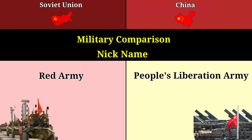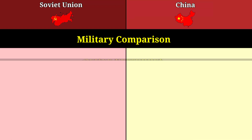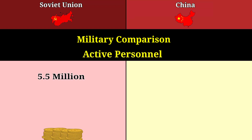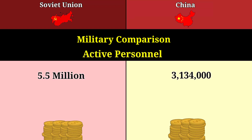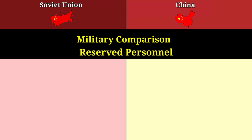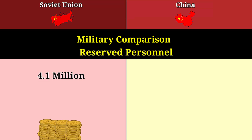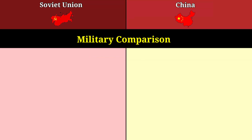Military comparison. Nickname: Red Army for the Soviet Union, People's Liberation Army for China. Active personnel: 5.5 million for the Soviet Union, 3.1 million for China. Reserve personnel: 4.1 million for the Soviet Union, 660,000 for China.